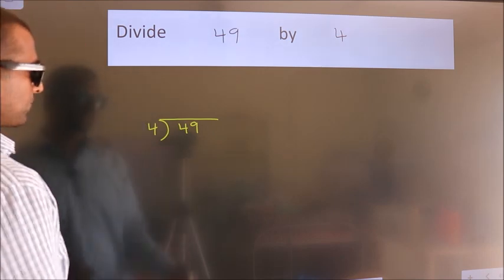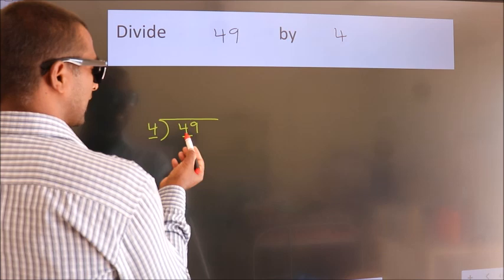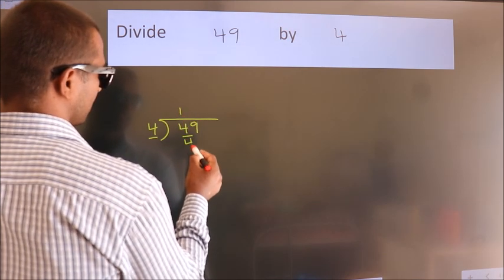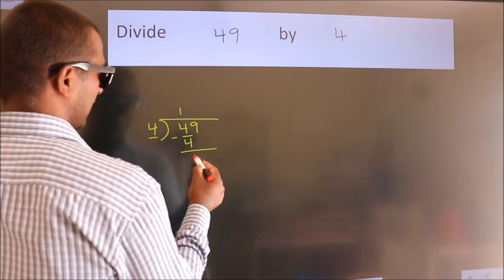Next, here we have 4, here 4. When do we get 4? In 4 table, 4 once is 4. Now we should subtract, we get 0.